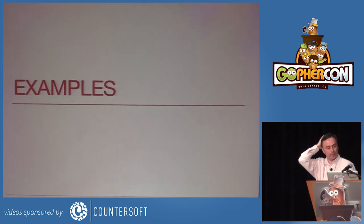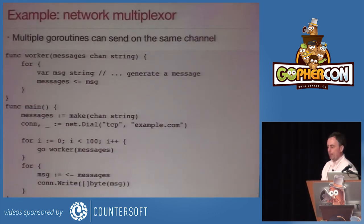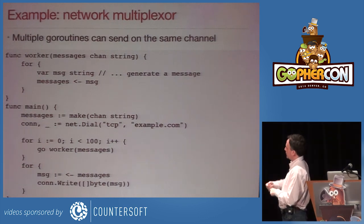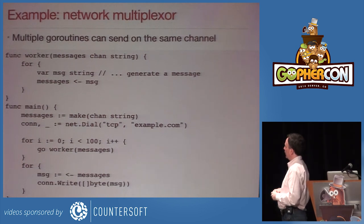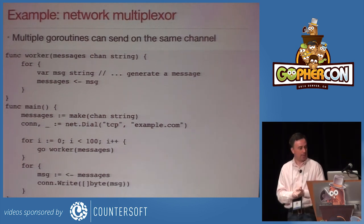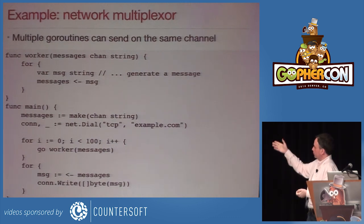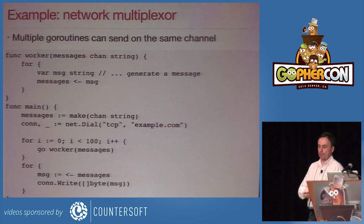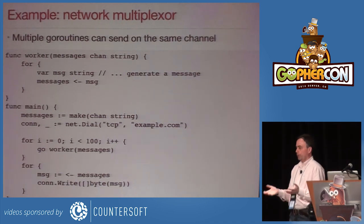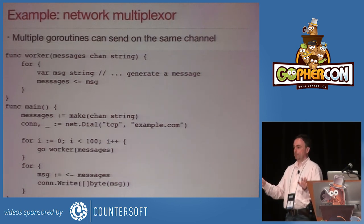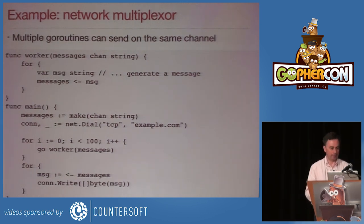Some examples of slightly larger programs. Network multiplexing: I throw up a hundred goroutines that create some text messages, and then a main loop reads those messages as they come in and sends them on a network connection. Multiple goroutines can just write to the same channel — there's no concern about that. There's a multiplexer right there, zero work to do that. It fits on one slide in big type.